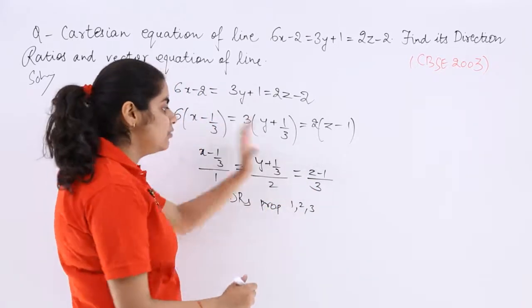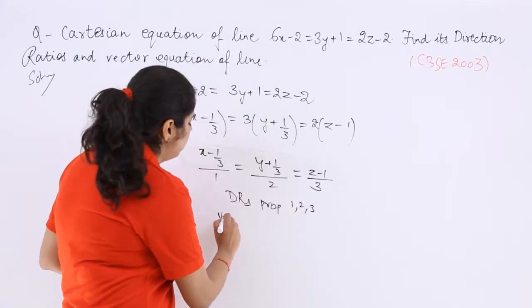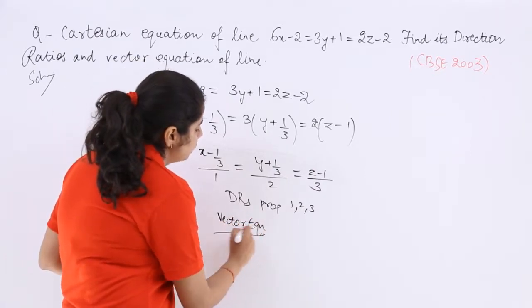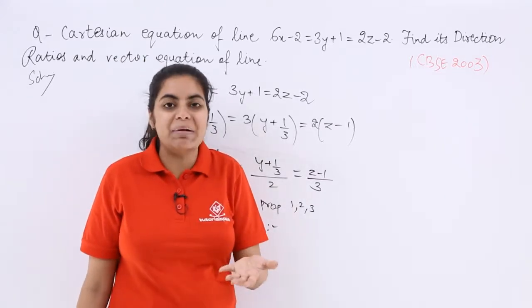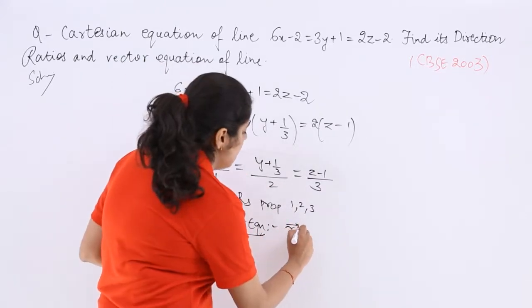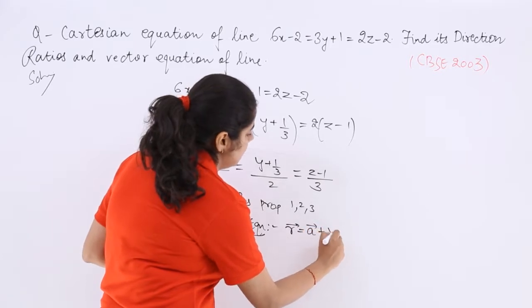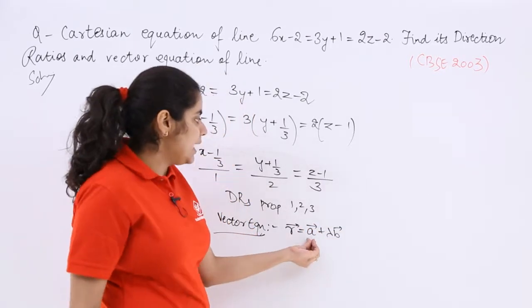And what is the vector equation of a line? So the vector equation can also be found out. Let us see how. You know that vector equation is R is equal to A plus lambda B.